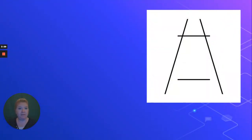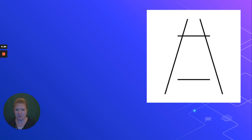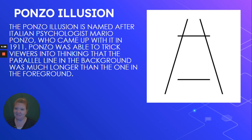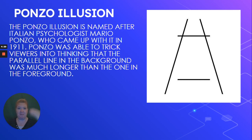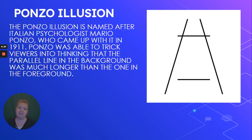Here we have two vertical lines, but let's focus on the horizontal lines — which one looks longer? This is the Ponzo illusion, named after Italian psychologist Mario Ponzo, who came up with it in 1911. He was able to trick viewers into thinking that the parallel line in the background — the one up at the top — was longer than the one in the foreground, when in reality they're the same size. We're just tricked because of the angled vertical lines.